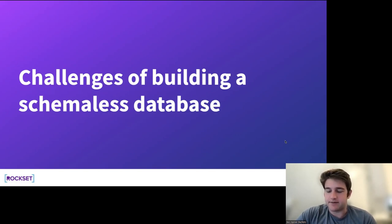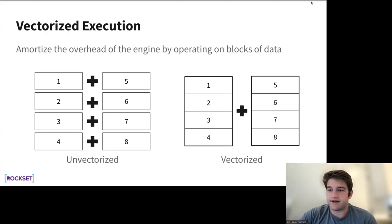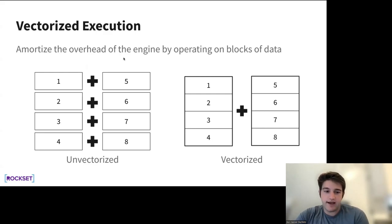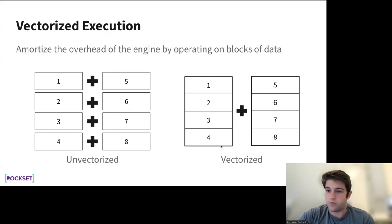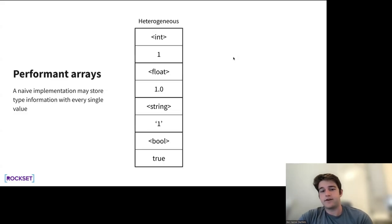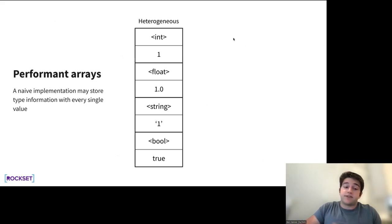So why is schema-less, dynamically typed data hard to build? To explain how Rockset gets good performance, a bit of background on vectorized execution engines. It's a common technique to amortize away the interpretation overhead of executing a query — instead of tracing over the AST for every single tuple, you operate on batches of data. You don't trace the AST per tuple; instead, you recognize you're doing an addition on a column of 4,000 integers, pay the interpretation overhead once, and your inner loop stays tight. Rockset has a columnar vectorized execution engine, which lets you amortize not just AST interpretation overhead but also the overhead of dynamic typing.